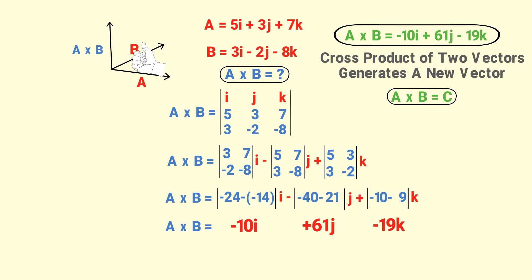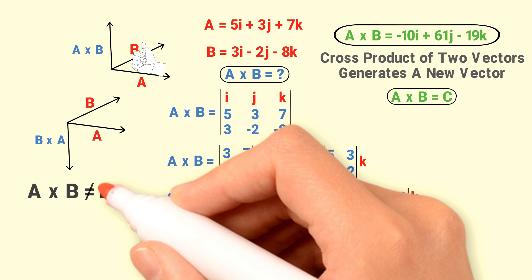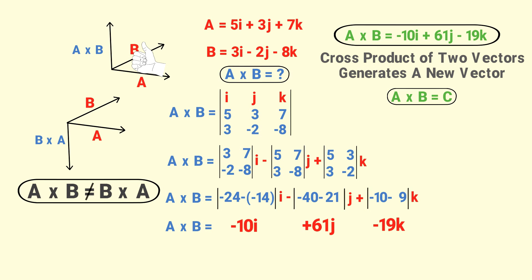Here are two bonus MCQs. The direction of A cross B is upward, while the direction of B cross A is downward according to the right-hand rule. That is why A cross B is not equal to B cross A — their directions are opposite. Thus, A cross B equals negative B cross A, where the negative sign indicates the opposite direction.